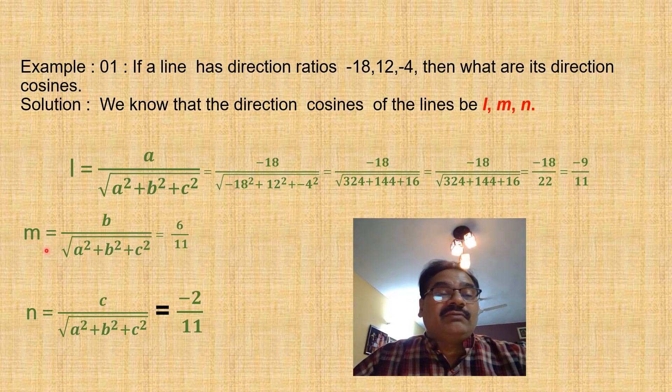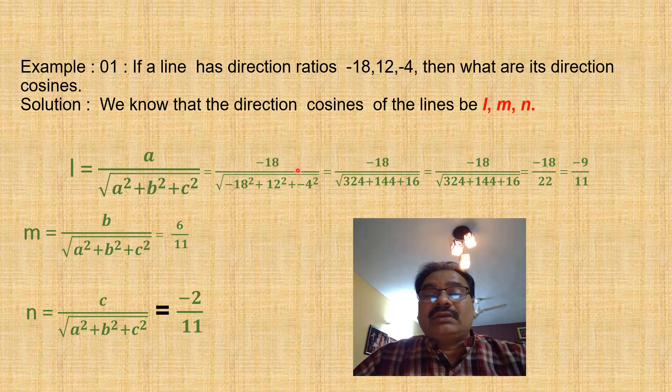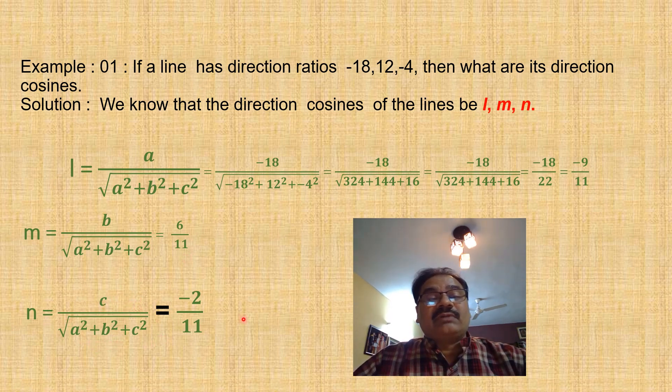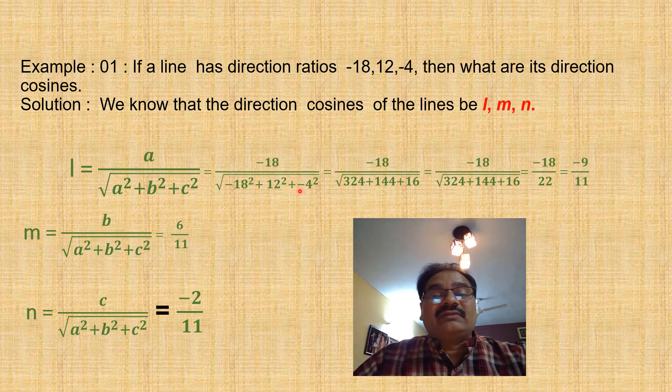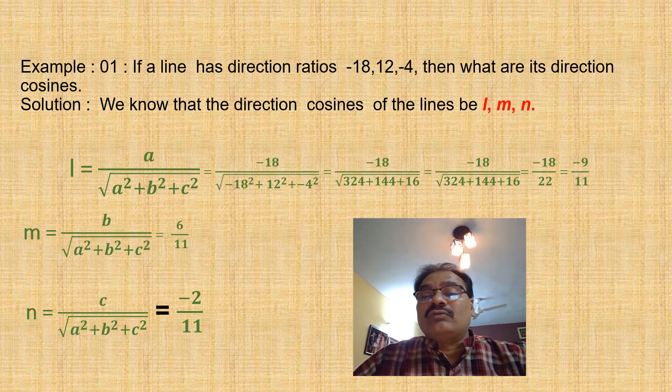Similarly, m = b/√(a² + b² + c²). The denominator is the same, only the numerator changes. So m = 12/22 = 6/11. Similarly, n = -4/22 = -2/11. In this way you have calculated l, m, and n, which are the direction cosines.